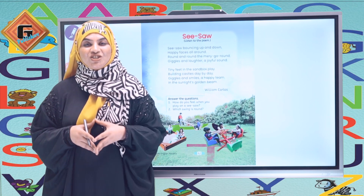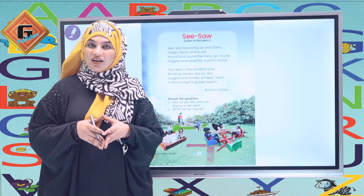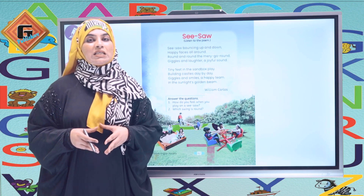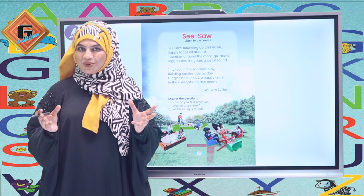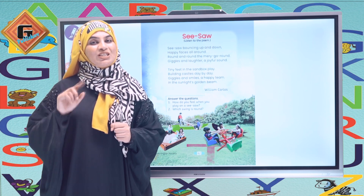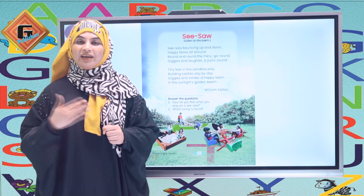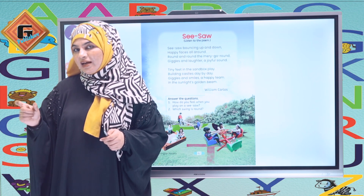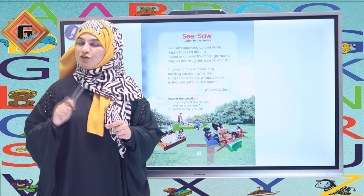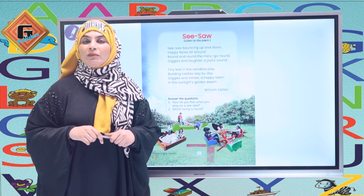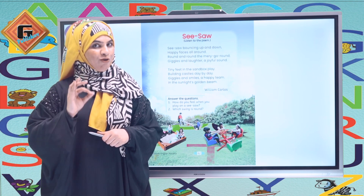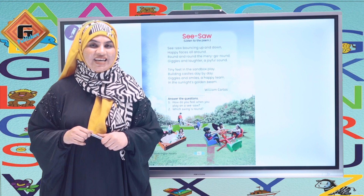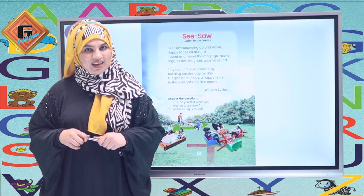Yes students, this was our letter S. I hope you understand letter S and enjoy the poem. What did you notice? There are two words from this poem that start with the S sound — seesaw and sand. They were building castles in the sand. Now you will revise letter S, practice the formation, and complete the activities. And it is time for your home activity — you have to build your own sand castle! Thank you so much for watching. Take care and Allah Hafiz.